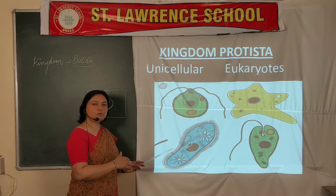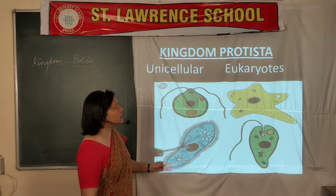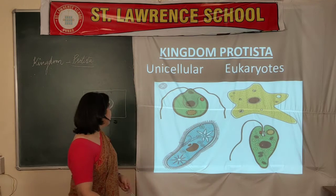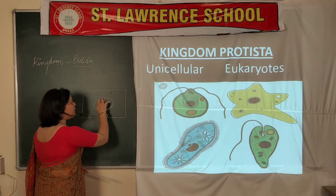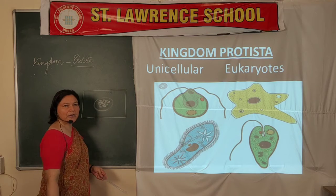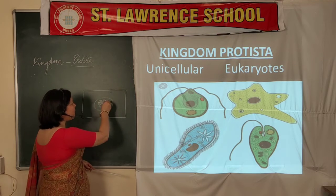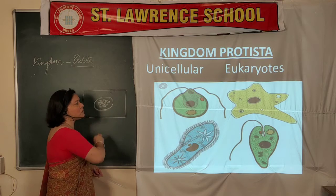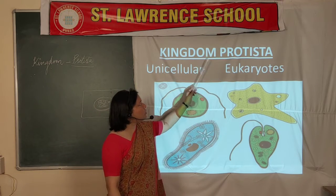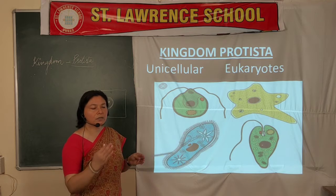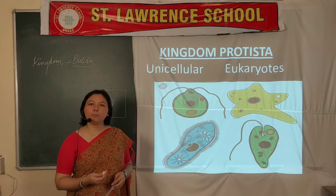Kingdom Monera also has unicellular organisms, but they were prokaryotes — their genetic material was not surrounded by a nuclear membrane. When the genetic material is surrounded by a nuclear membrane it becomes a well-defined nucleus, and organisms which have both unicellular and eukaryotic properties come under Kingdom Protista.